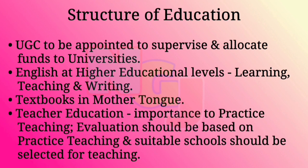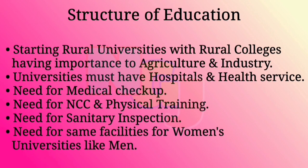They suggested suitable schools to be selected for teaching practice. They recommended starting rural universities with rural colleges giving importance to agriculture and industry. They felt the need for hospitals and health services in universities, suggesting regular medical checkups for students. They also insisted on having NCC and physical training at the college level, sanitary inspection in all colleges and universities, and recommended the same facilities for women's universities as for men.